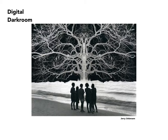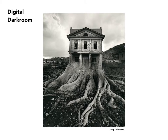Jerry Uelsmann creates incredibly complex multiple images. In this case, he's taken the negative of a tree and flipped it horizontally so that it's completely symmetrical, then combined that with a shot of the seashore, and into that included the image of the women in silhouette. This is quite typical of Uelsmann's work, in which he has taken a structure and placed it in such a way that it looks like it's growing out of the root structure of a tree. This image probably involved three or four images to begin with.